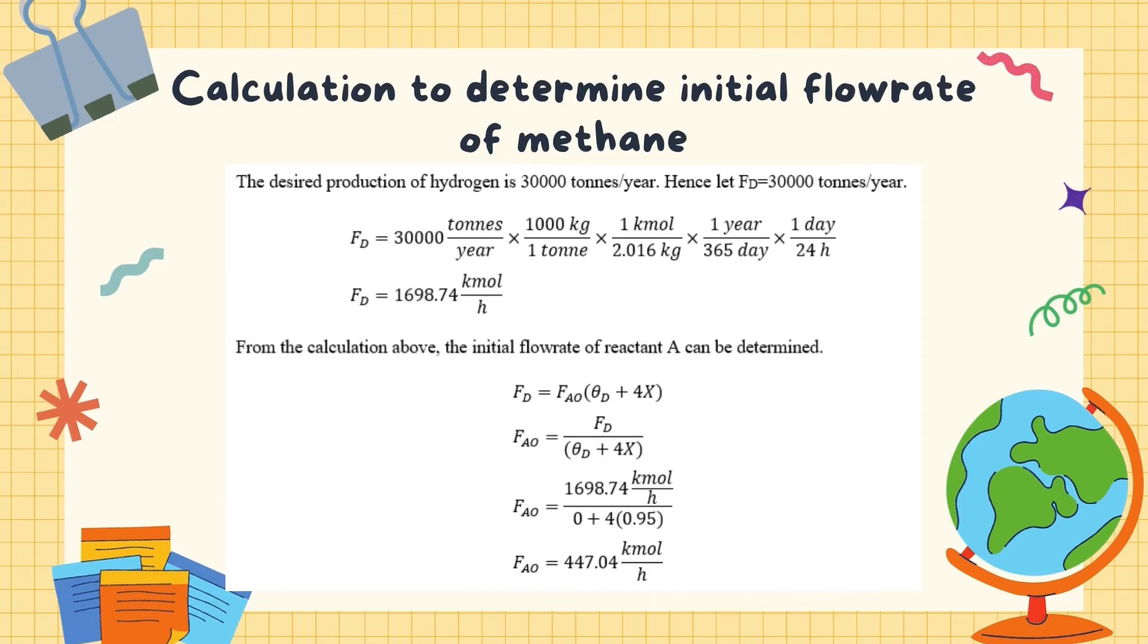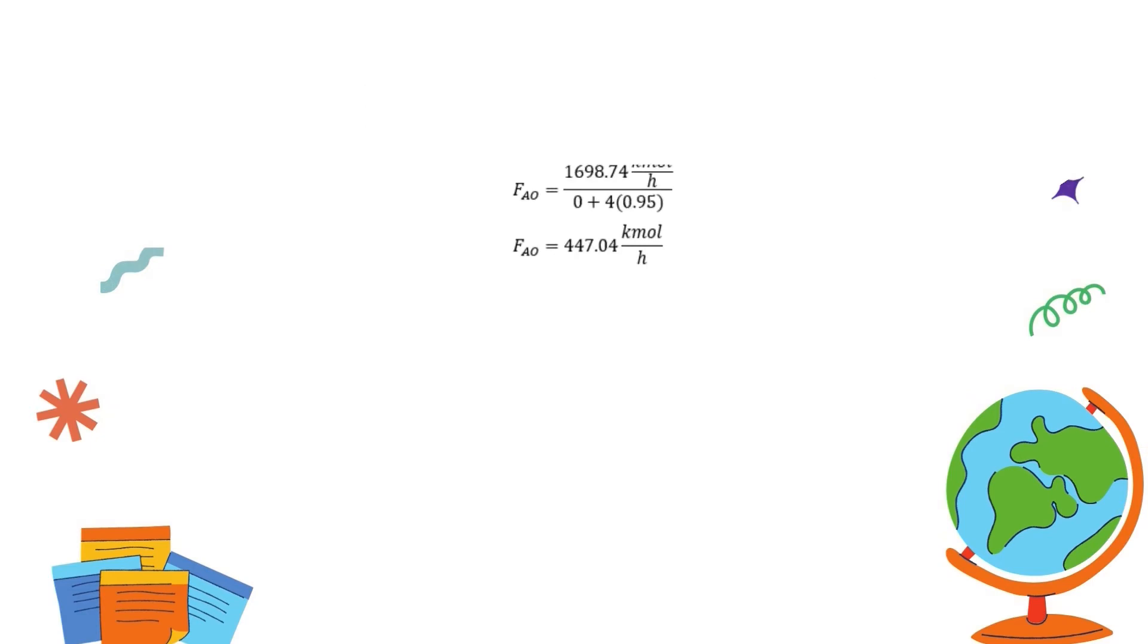Next, the initial flow rate of reactant methane is calculated by firstly determining the flow rate of product hydrogen using the information given in the equation. From the calculation, the initial flow rate of methane is 447.04 kmol per hour.